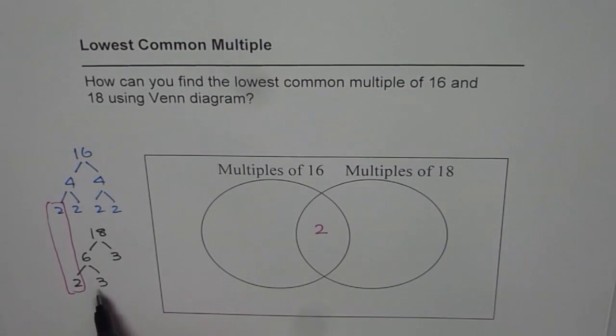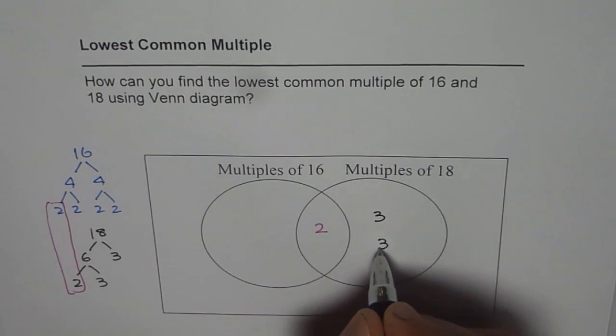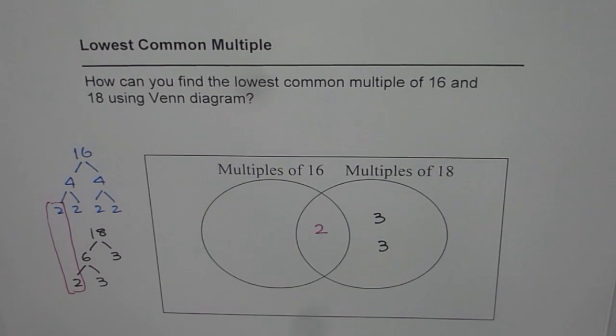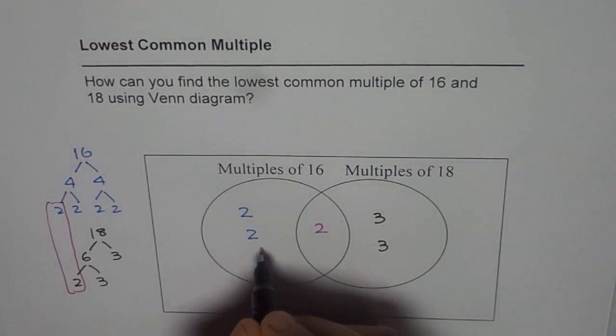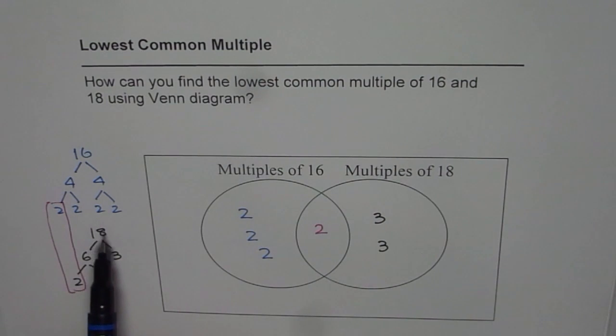Now for 18, we have 3 times 3. So let me write 3 times 3 here. We have one 3, another 3. For 16, we are left with 2 times 2 times 2. So we will write these 2s here. So that is how we can place the prime factors of 16 and 18 in a Venn diagram.